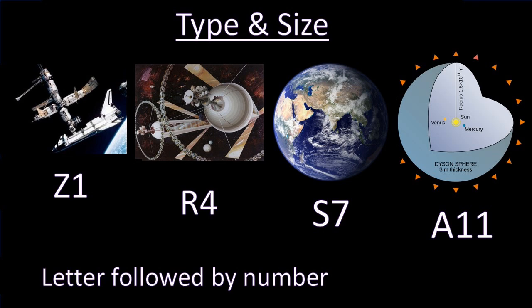So type and size will be combined as follows. Z1 would be a zero gravity environment about 10 meters across like the space station. A large rotating habitat several miles long would be a R4. Something the size of the earth and almost all of the planets you'd normally associate as being a planet that you could live on would be a S7 indicating a spherical gravity and is about 10,000 kilometers or 10 million meters across. And then an A11 would be something with artificial gravity about the size of Earth's orbit around the sun like a Dyson sphere.